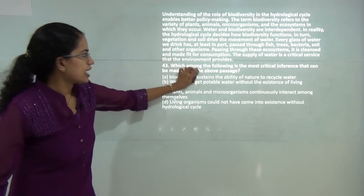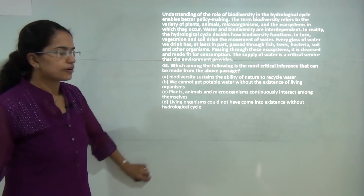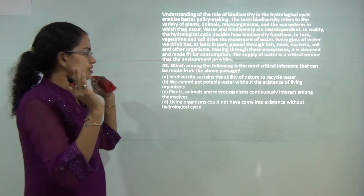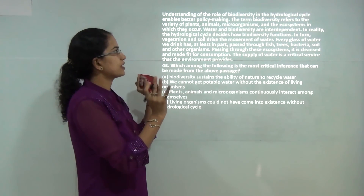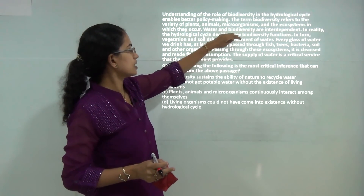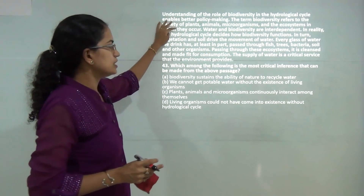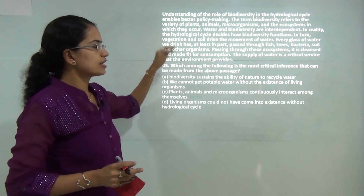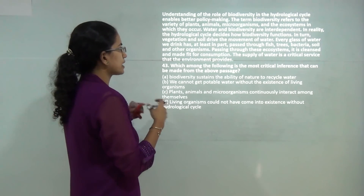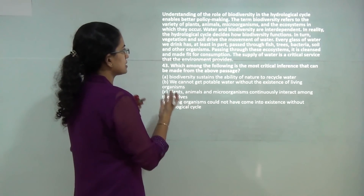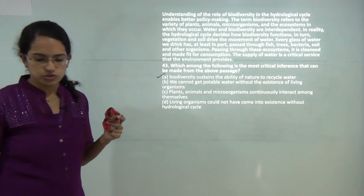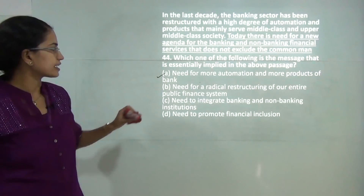The next question focuses on biodiversity, which includes variety of plants, animals, and microorganisms. These have an ability to naturally recycle water — nature has the ability to recycle water on its own. So A is the correct answer.